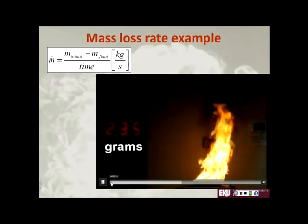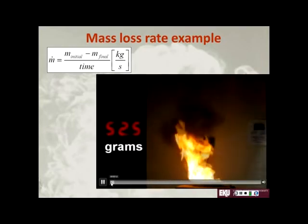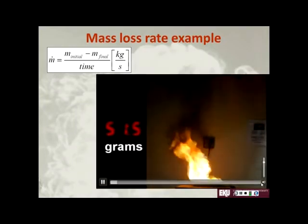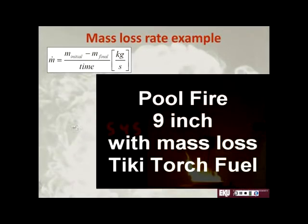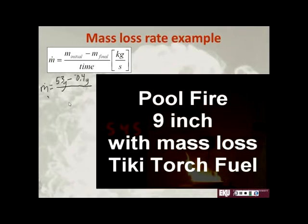So when we started, we were at 53 grams. When we finish, we're at negative 4 grams. So m-dot: our mass initial was 53 grams, our mass final was negative 0.4 grams, and our time was 1 minute and 58 seconds.